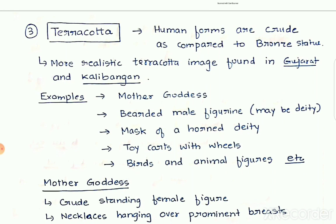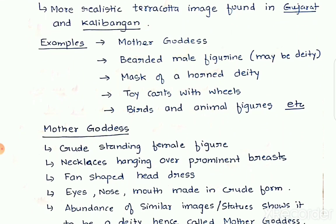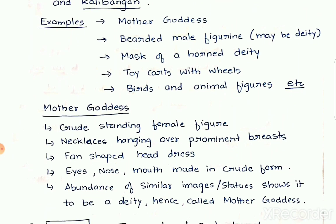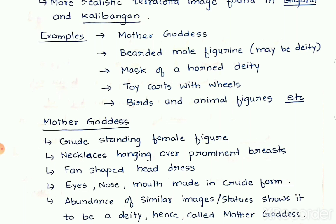The third important sculptures were found in terracotta. Terracotta sculptures are widely found in different sites of the Indus Valley civilization. A special feature of these images is that the human forms are made in a more crude form compared to bronze statues. The terracotta images from Gujarat and Kalibangan are more realistic in form. Examples of terracotta sculptures include mother goddess, bearded male figurines, possibly a deity, masks of a horned deity, toy carts with wheels, and birds and animal figures. The abundance of terracotta sculptures indicates that even common people created these small toys and figures for their utilization.